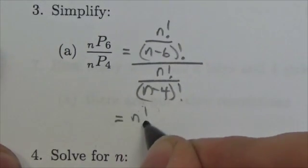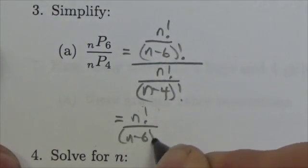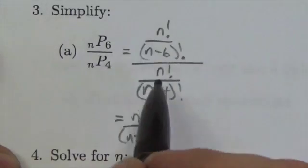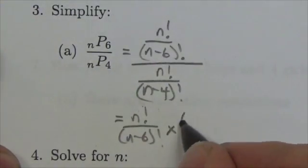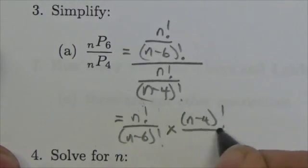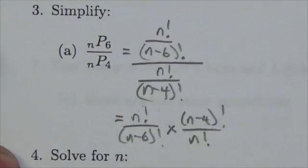So I'm going to make this n factorial over n minus 6 factorial. We're dividing by a fraction, so I'm going to multiply by the reciprocal, so this will be multiplied by n minus 4 factorial over n factorial, and that was a great thing to do because my n factorials will cancel.